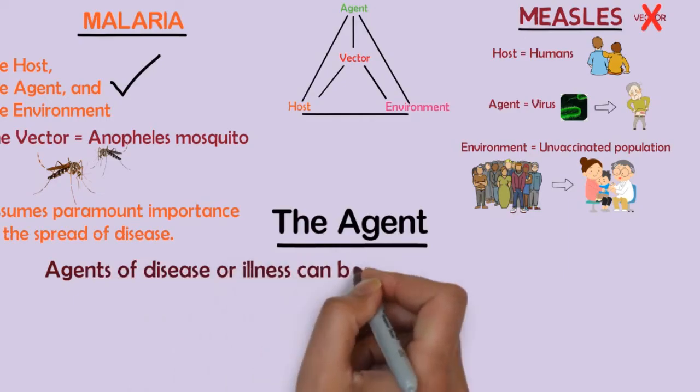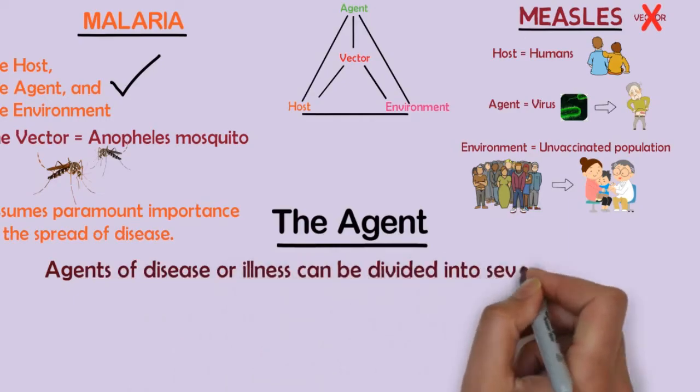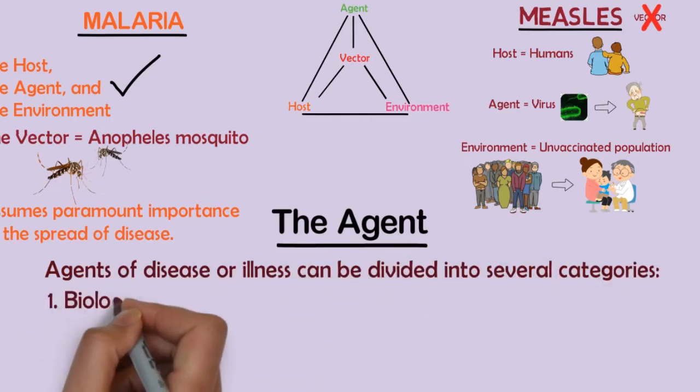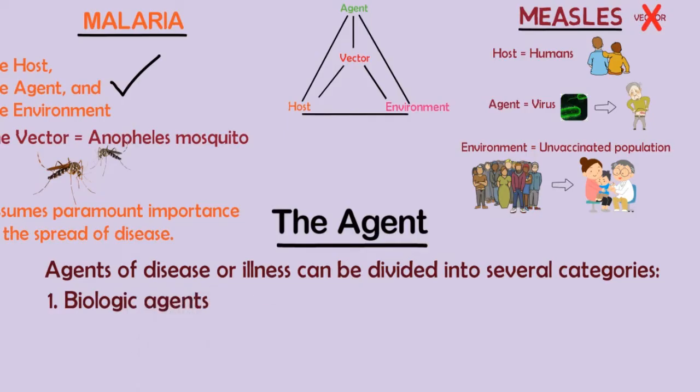Agents of disease or illness can be divided into several categories. First, biologic agents, including allergens, infectious organisms such as bacteria and viruses, biologic toxins such as botulinum toxin, and foods such as a high-fat diet.